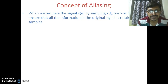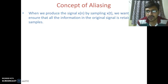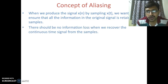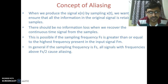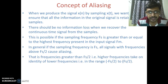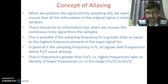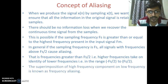Now we will see the concept of aliasing. One of the blocks present in a DSP system is the anti-aliasing filter, and we will see the need for it. When we produce the signal x(n) by sampling x(t), we want to ensure that all the information in the original signal is retained in the samples — there should be no loss of information when we recover the continuous time signal from the samples. This is possible if the sampling frequency fs is greater than or equal to the highest frequency present in the input signal, fm. In general, if the sampling frequency is fs, all signals with frequencies above fs/2 cause aliasing. The frequencies greater than fs/2 take on the identity of lower frequencies in the range −fs/2 to +fs/2. The superimposition of a high frequency component on a low frequency component is known as frequency aliasing.